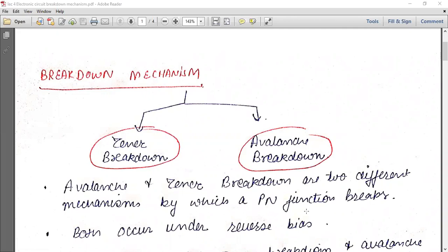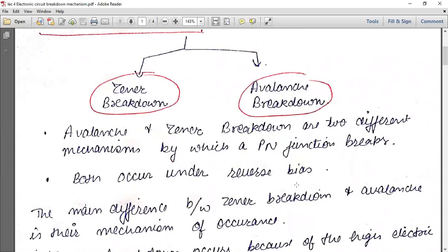PN junction means the combination of P-type semiconductor and N-type semiconductor. But remember, it always occurs in reverse biasing. Both occur under reverse bias.